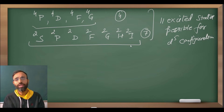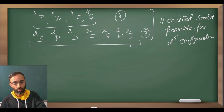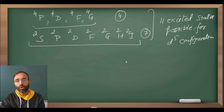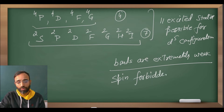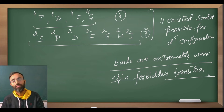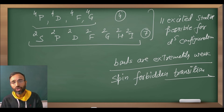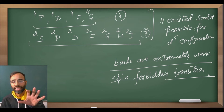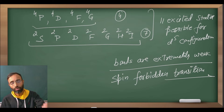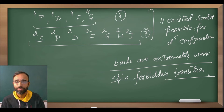But we ignore the 2-electron spin-forbidden transitions — that is ²S, ²P, ²D, ²F, ²G, ²H, ²I — because their intensity is very weak. All transitions possible in D5 are spin-forbidden. That's why we consider only the one-electron transitions, since two-electron transition probability is very, very low. So we take into account the ground state and ⁴P, ⁴D, ⁴F, and ⁴G.